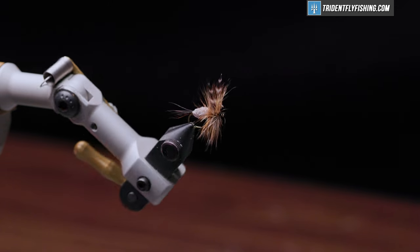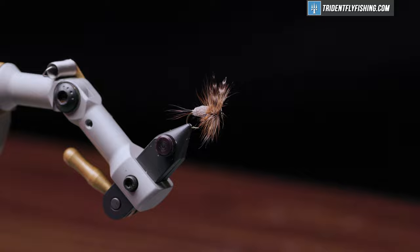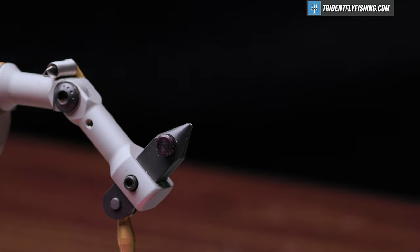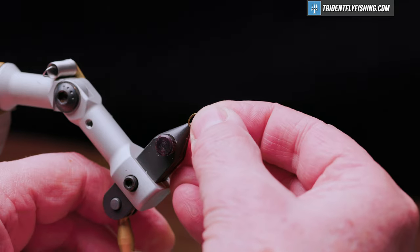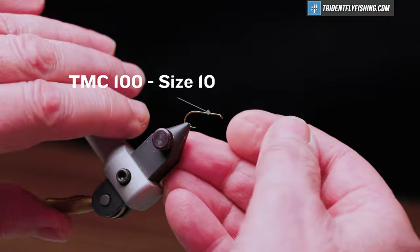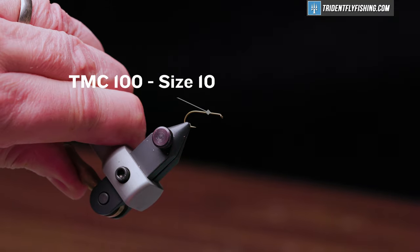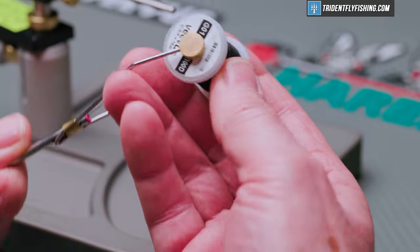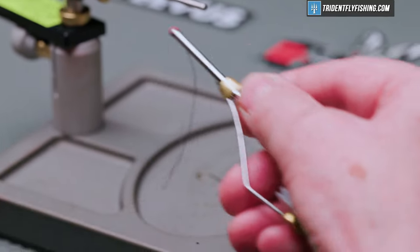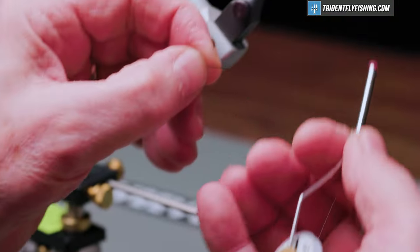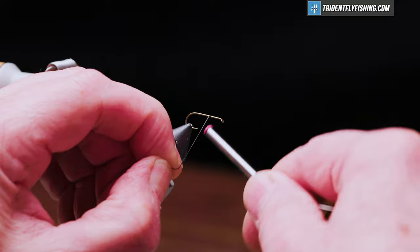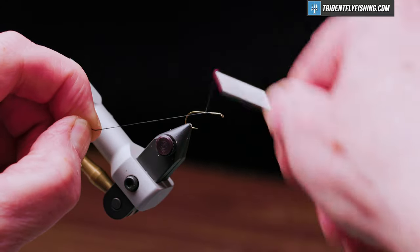Here's the fly in the vise. Our hook today is a TMC 100, that's their standard dry fly hook in a size 10, and our thread is Vivas GSP 100 in black. We'll get the thread started about a third of the way back down the hook shank and wrap back to the hook bend.